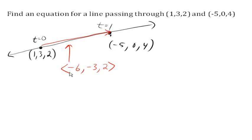Now we can write the equation for our line, r of t. So a position vector pointing to our starting point would be 1, 3, 2. And our direction vector here is negative 6, negative 3, 2. And there is a vector equation for this line.